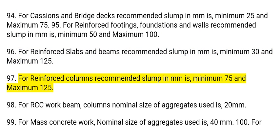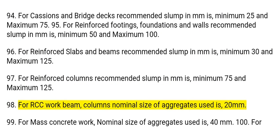97. For reinforced columns, the recommended slump is minimum 75 mm and maximum 125 mm. 98. For RCC work — beams and columns — the nominal size of aggregates used is 20 mm.